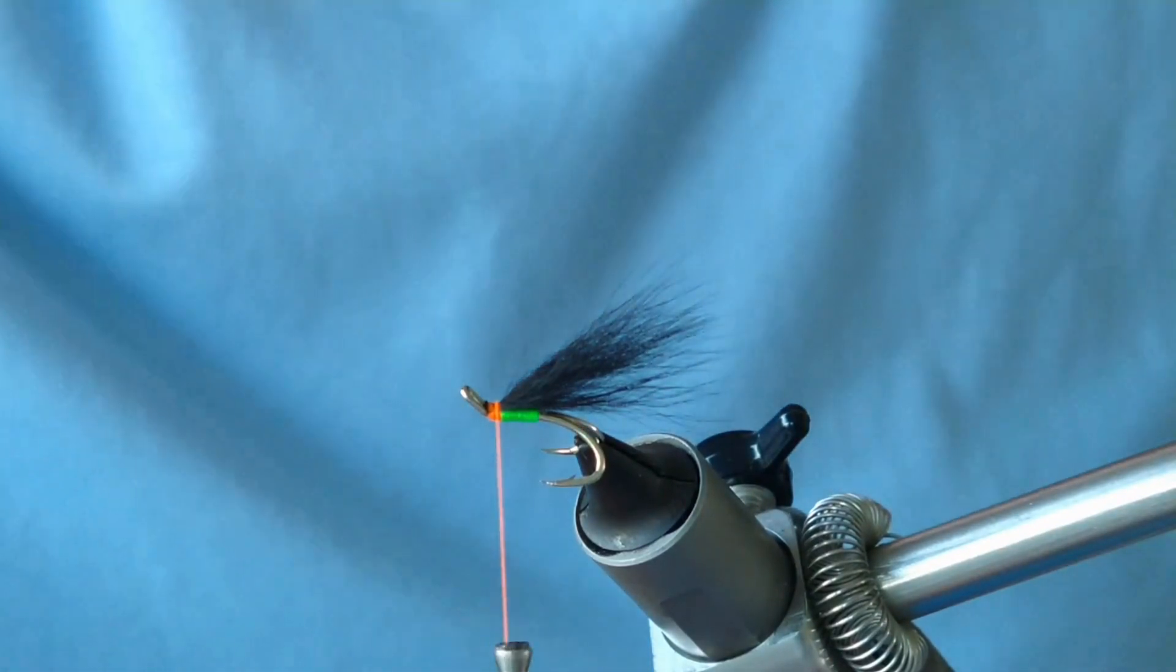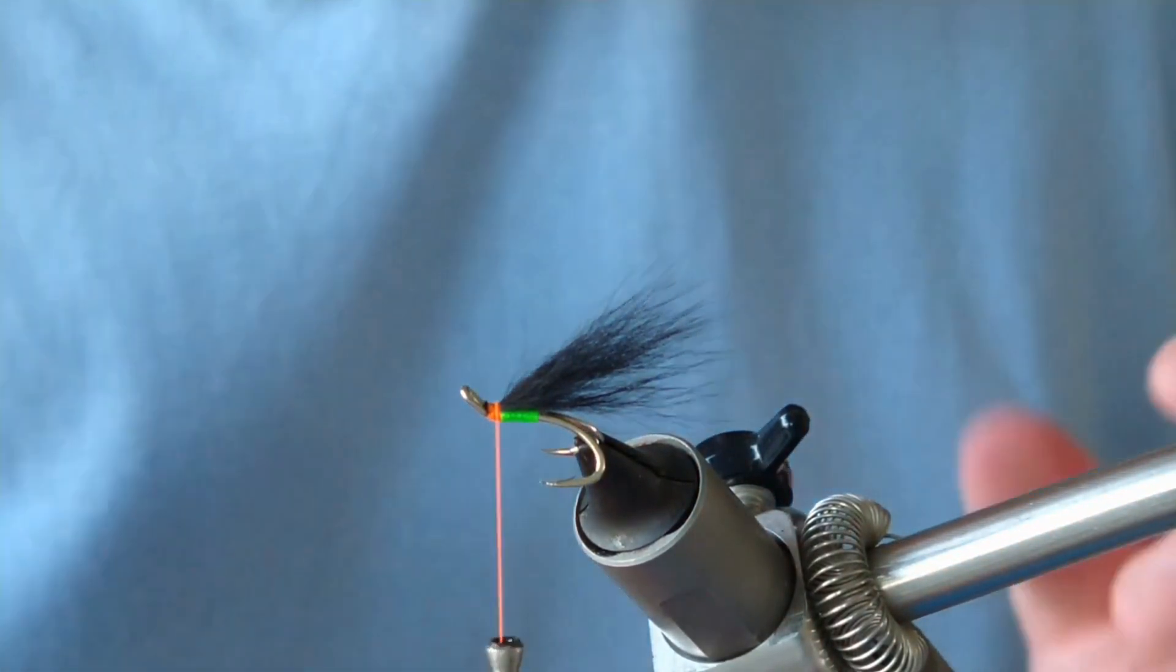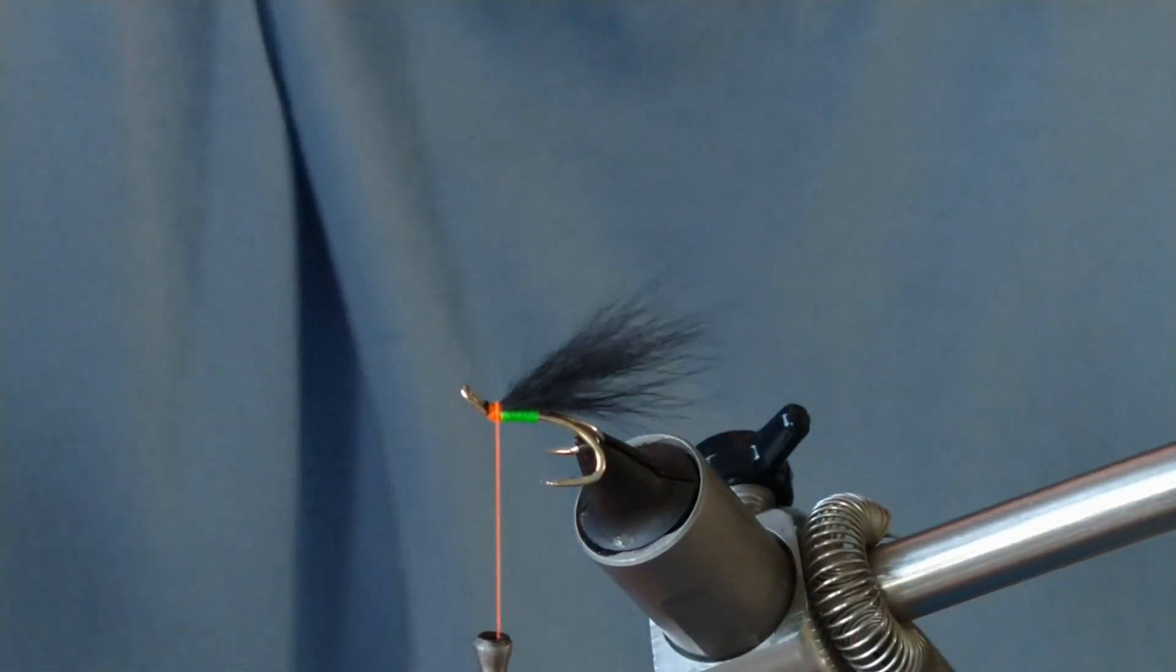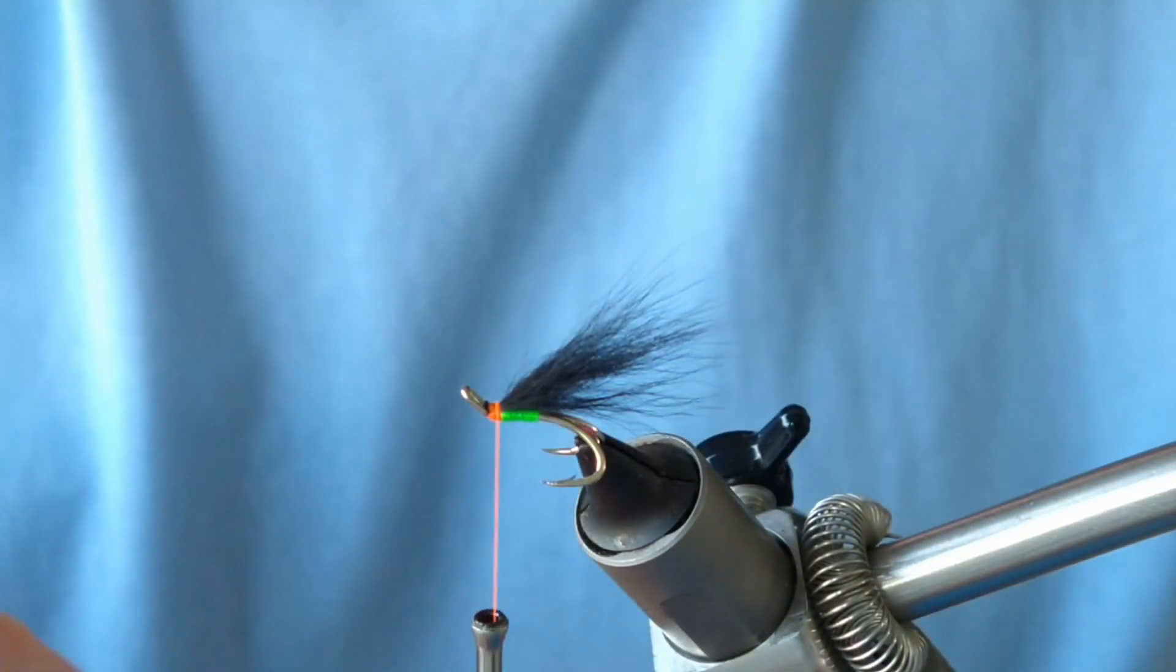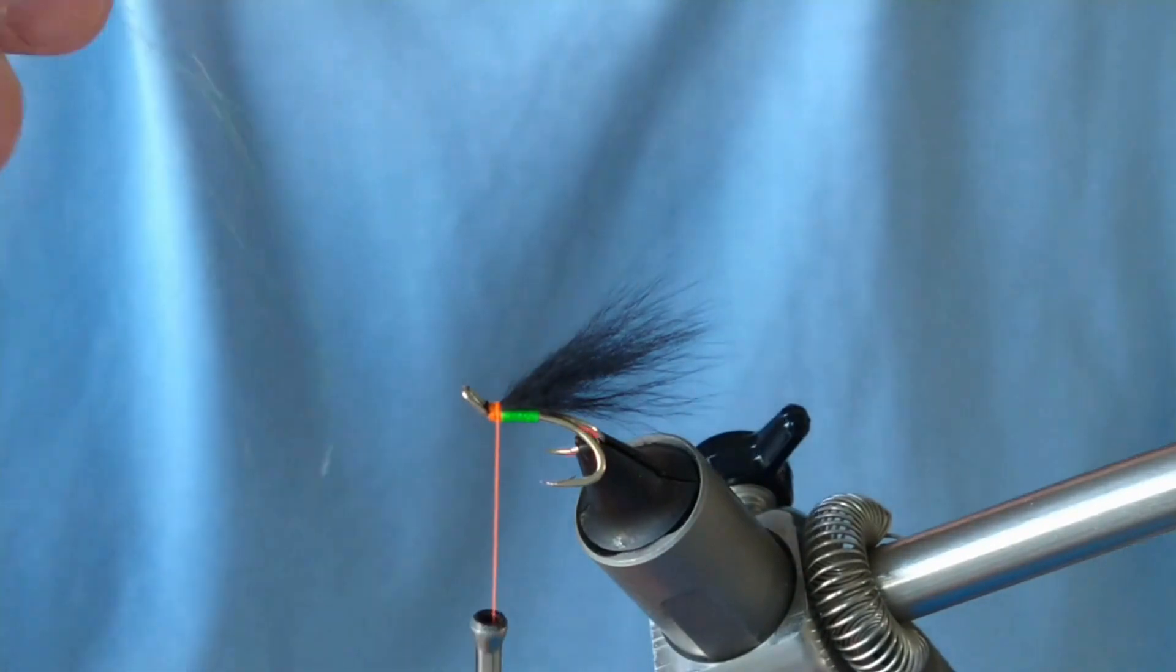Then you can use a wee bit of flash. Because this is a fox wing I like to use something a bit more mobile. And because of the green body I'm going to use some green flash here.